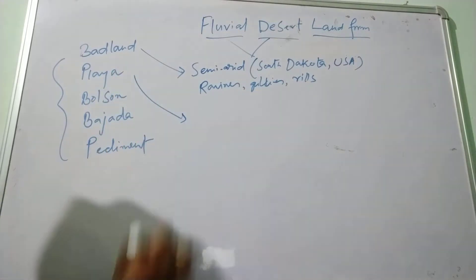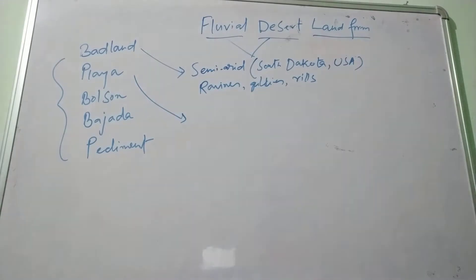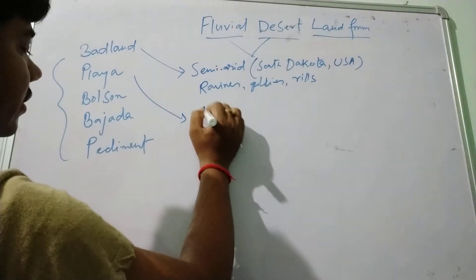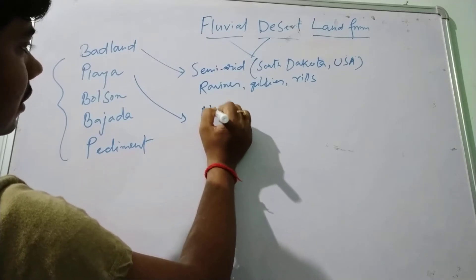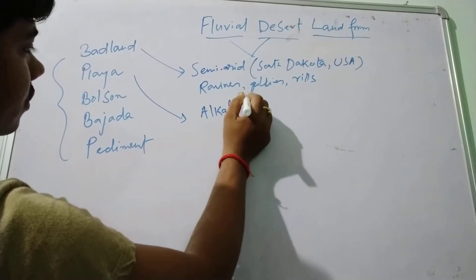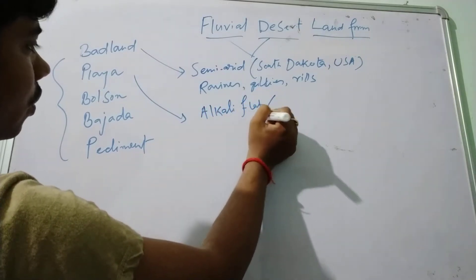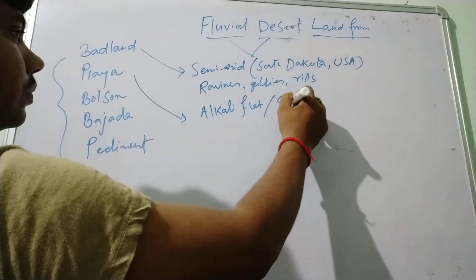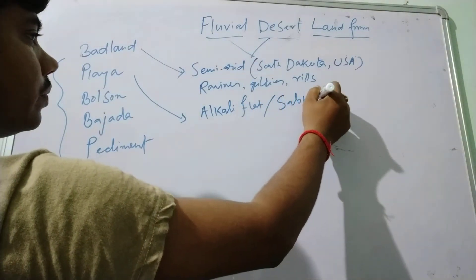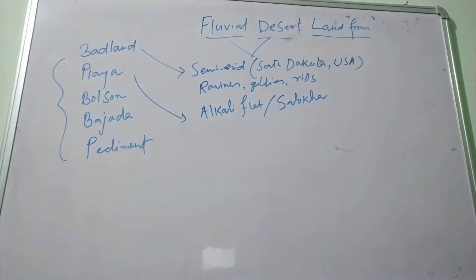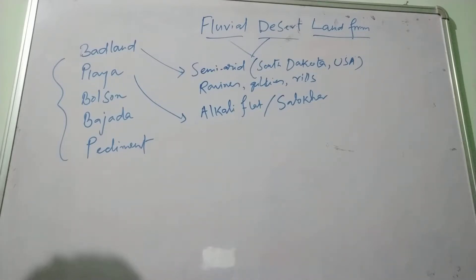Next is playa. Playa is also known as alkali playa, which is alkaline in nature. This is a desert basin with no outlet, which is periodically filled with water, and they form a temporary lake.